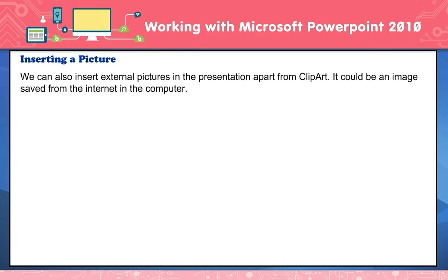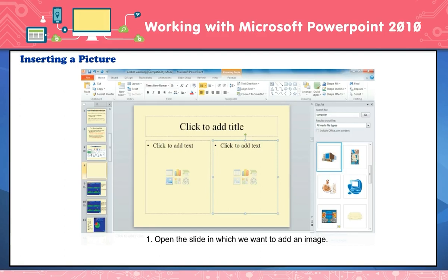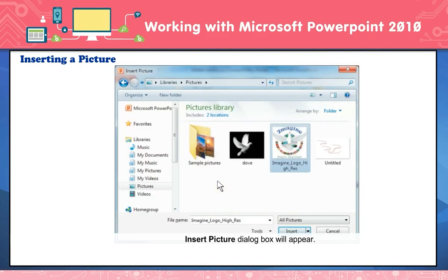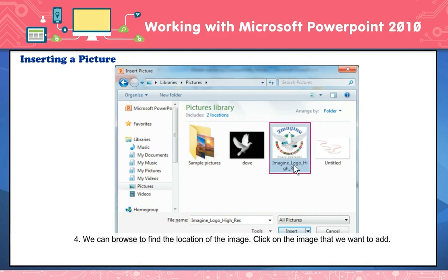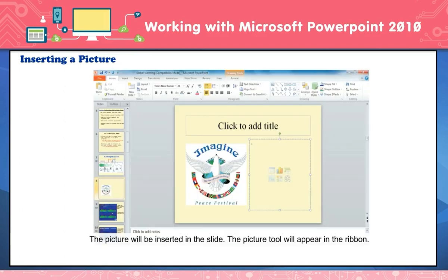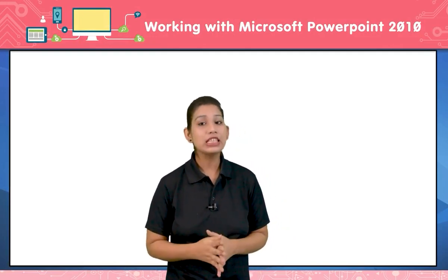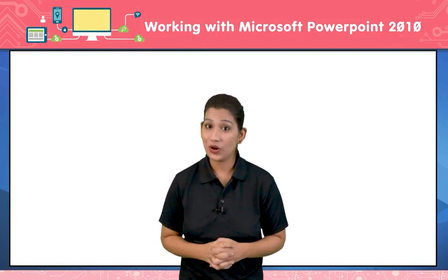Inserting a picture. We can also insert external pictures in the presentation apart from clipart — it could be an image saved from the internet to the computer. To insert a picture: open the slide in which you want to add an image. Change the layout of the slide to the layout that includes an insert picture placeholder. Click on the picture icon. The Insert Picture dialog box will appear. Browse to find the location of the image. Click on the image that you want to add. Click on Insert. The picture will be inserted in the slide, and the Picture Tool will appear in the ribbon. We now know how to insert a clipart or a picture.